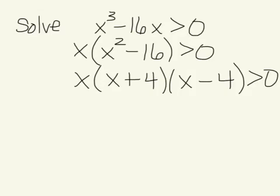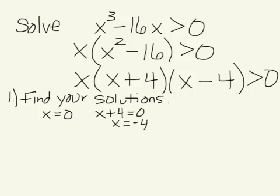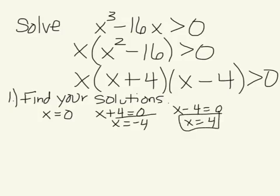When working with inequalities, the first thing you want to do is find your solutions. The way you do that is to take each factor being multiplied, set it equal to zero, and solve. So our solutions are x = 4, x = -4, and x = 0.